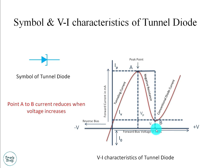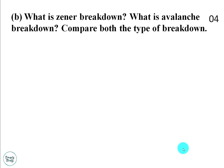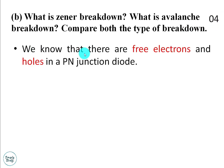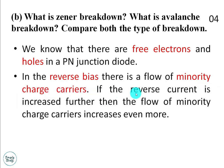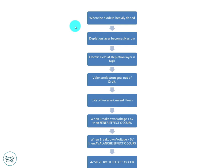Question 1B asks: what is Zener breakdown, what is avalanche breakdown, and compare both types. This question is for 4 marks. In a PN junction diode under reverse bias, there is a flow of minority charge carriers. If the reverse voltage is increased further, the flow of minority charge carriers increases even more. The phenomena of breakdown is explained in this flowchart.